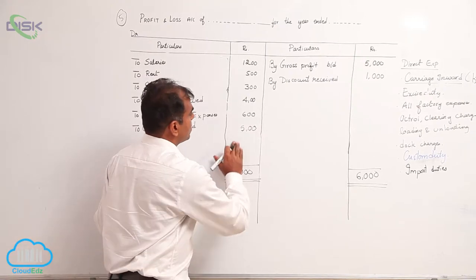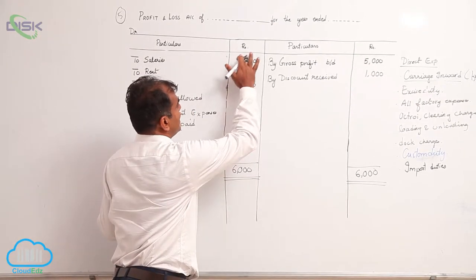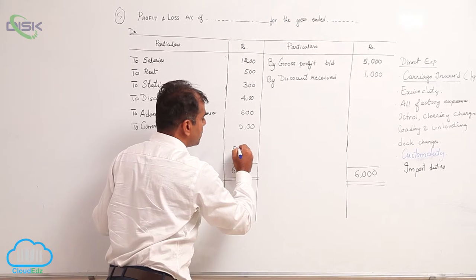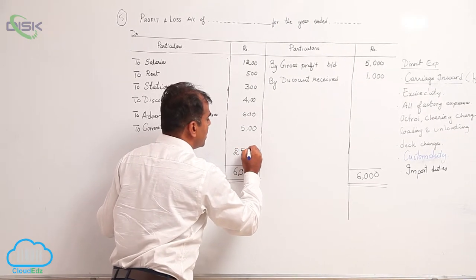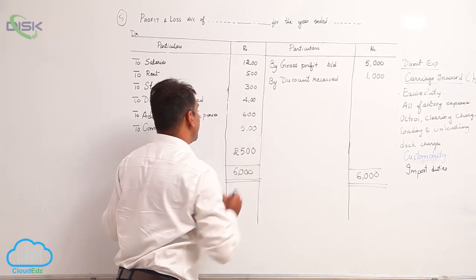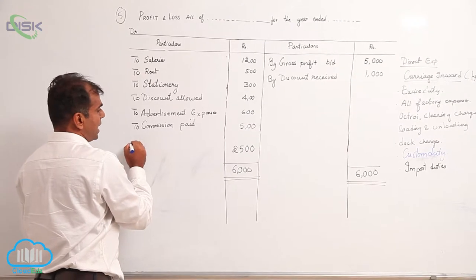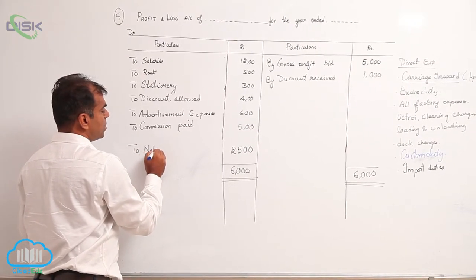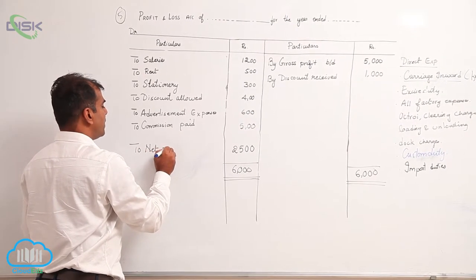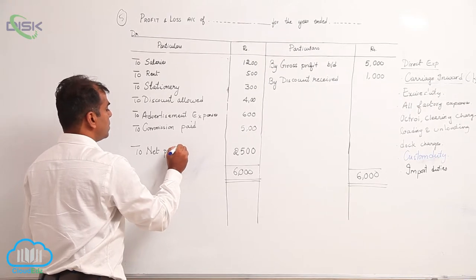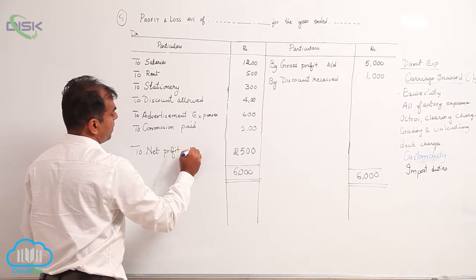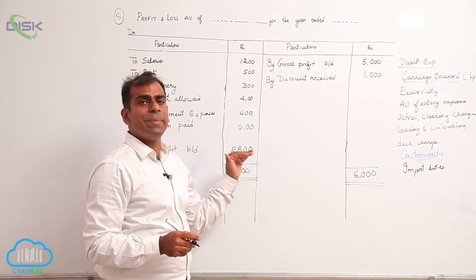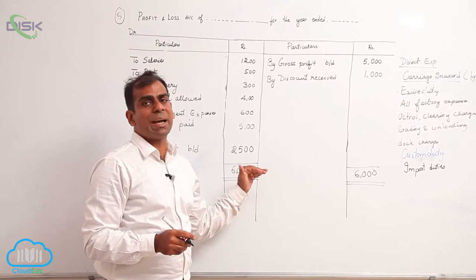When I minus from six thousand all these expenses, I am getting a value of two thousand five hundred. So that is going to be my net profit, so I am writing it as net profit — brought down to net profit brought down.